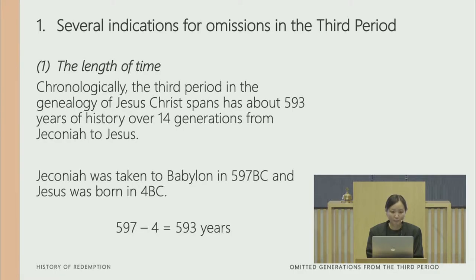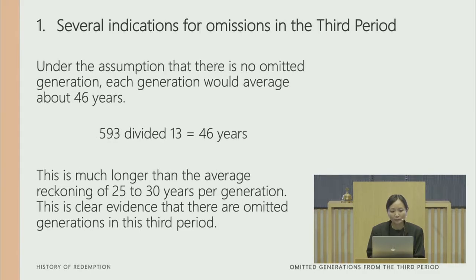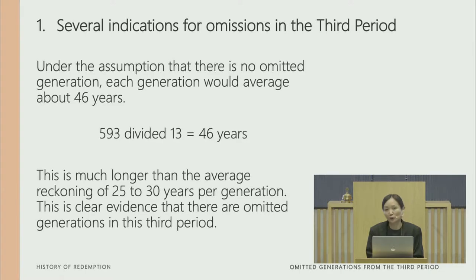First, we look at the length of time. The third period in the genealogy of Jesus Christ spans about 593 years of history over 14 generations from Jeconiah to Jesus. Jeconiah was taken to Babylon in 597 BC and Jesus was born in 4 BC — 597 minus 4 equals 593 years. Under the assumption that there is no omitted generation, each generation would average about 46 years — dividing 593 by 13 gives us 46 years. But this is much longer than the average reckoning of 25 to 30 years per generation, which is clear evidence that there are omitted generations in this third period.